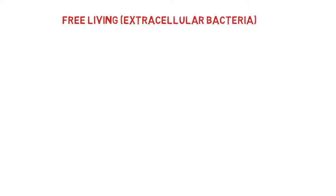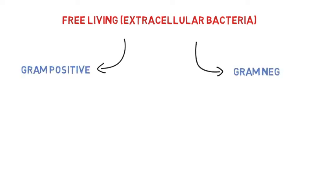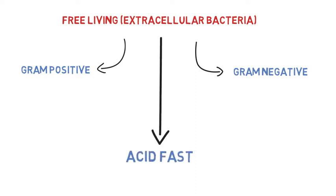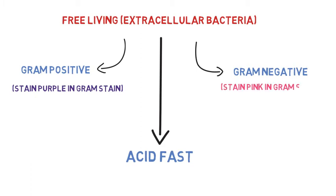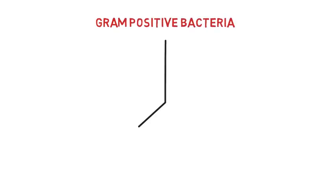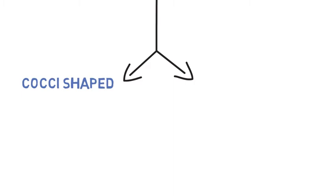The free-living bacteria are further subdivided into 3 categories according to their staining characteristics: Gram-positive bacteria, Gram-negative bacteria, and Acid-fast bacteria. We have read about Gram-positive bacteria in our previous video and these bacteria appear purple after the Gram-staining procedure. Gram-staining is actually a technique that helps in the identification of bacteria under the microscope, and we will surely discuss it in the coming videos. The Gram-positive bacteria may be cocci or rod-shaped.